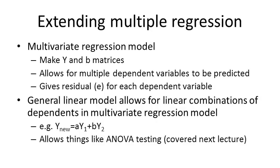One way to extend multiple regression is to turn it into a multivariate regression model, where we allow for more response variables on top of the extra predictor variables. Going back to the house example, the price could be determined by number of rooms and location, but we could also predict how many people are likely to try to buy the house given those same factors. This allows for multiple dependent variables to be predicted by extending Y and B into matrices. The GLM also allows for linear combinations of those dependent variables, enabling things like ANOVA testing.